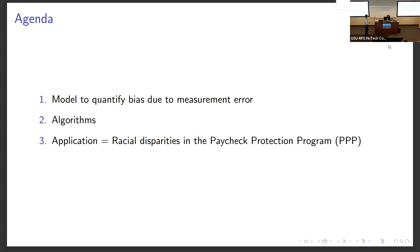The agenda consists of three parts. First, I'll talk about a model to quantify bias due to measurement error. I'll then talk about the algorithms we're going to consider. And then we'll use racial disparities in the Paycheck Protection Program as a setting in which we can see how the conclusions we draw might depend on whether we use actual race or predictions from these models.